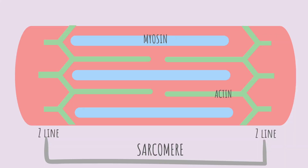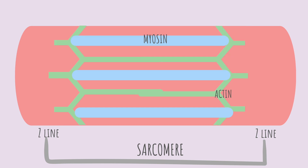Let's zoom back out and take a look at that one more time from a bigger perspective. The sarcomere is relaxed — you can tell because the myosin is far from the Z lines and the actin is far from the midline. Here, the muscle is contracted. Notice the myosin close to the Z lines and the actin close to the midline.